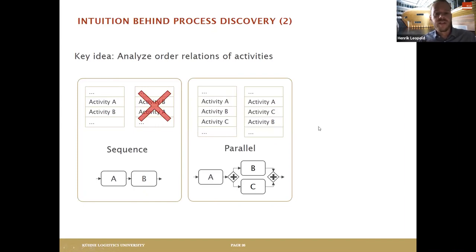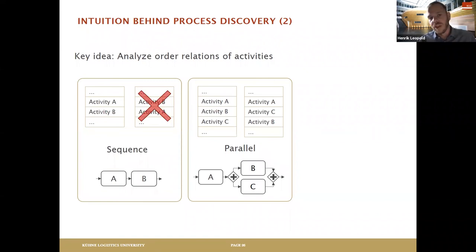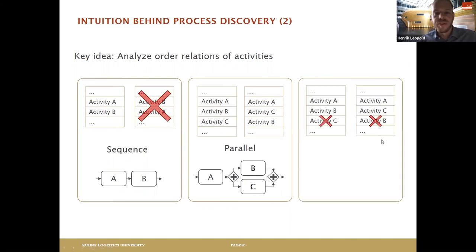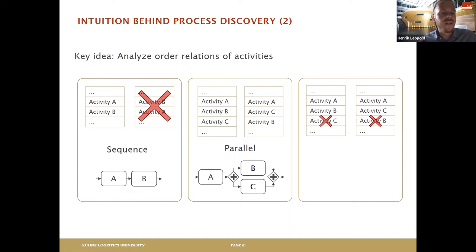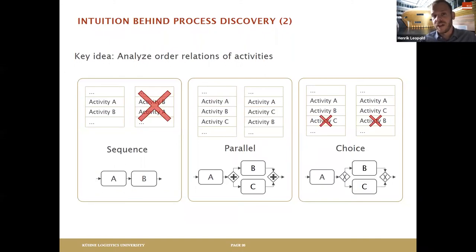In contrast, if sometimes A is followed by B then C, and sometimes by C then B, then clearly the order between B and C doesn't matter — that's a parallel execution, represented by a plus symbol. And if A is sometimes followed by B — but then C never occurs — and sometimes by C — but then B never occurs — then we've found an alternative or choice, designated by a cross symbol.